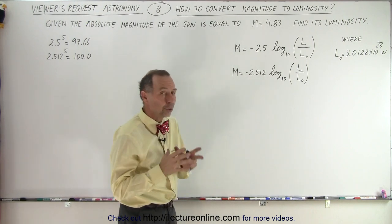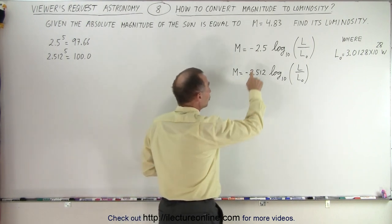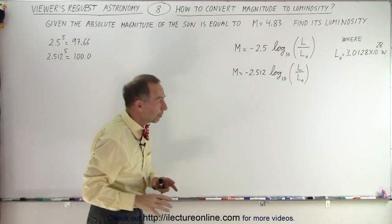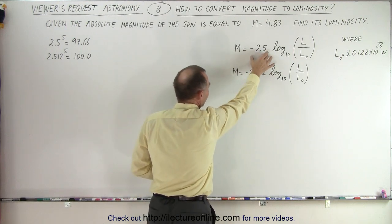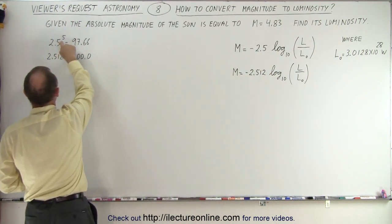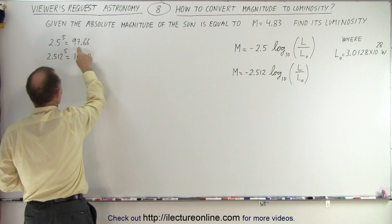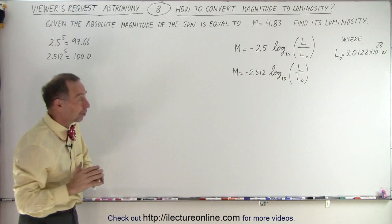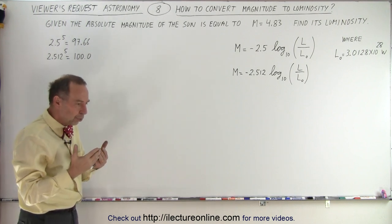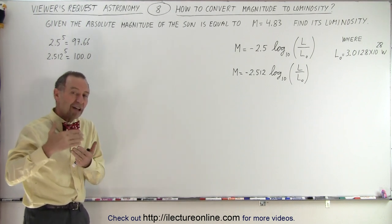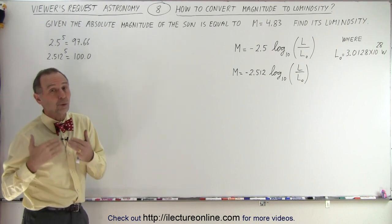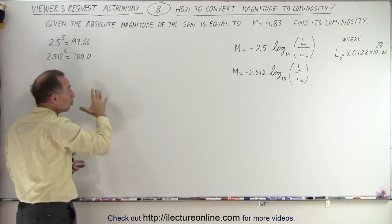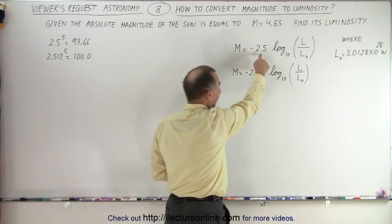Now I'm going to alter the equation just a little bit. Instead of using negative 2.5, I'm going to use negative 2.512, and I believe that's the correct number. This is just the rounded off number. But notice that if you take 2.5 to the fifth power, you get 97.66. If you take 2.512 to the fifth power, you get exactly 100, or very, very close to 100. And after all, the ratio of the change of 5 magnitude should equate to the ratio of a luminosity of 100 to 1. So this is really the best number to use, although most equations you find will look like this. It of course really doesn't matter that much because you just want to get close to the value.